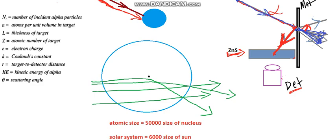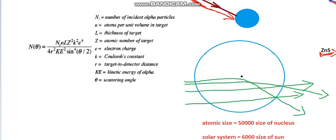He also calculated one important formula to determine the number of scattered alpha particles. From this formula, the number of scattered alpha particles is proportional to the total charge of the nucleus, inversely proportional to the fourth power of sine of theta over two, and also inversely proportional to the square of the kinetic energy. These are three important parameters in this equation, and we will discuss how these parameters affect the alpha scattering.